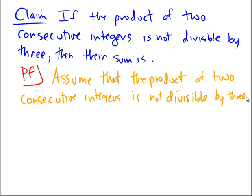So let's think about that for a moment. If the product of the two consecutive integers is not divisible by 3, then that means that neither of the integers themselves can be divisible by 3.